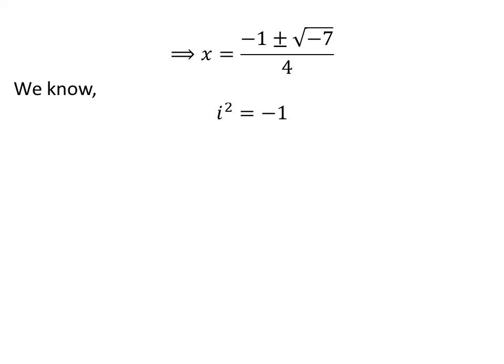We know square of imaginary unit i is minus 1. So, application of the above property gives us x is equal to minus 1 plus or minus square root of 7 times square of i upon 4.